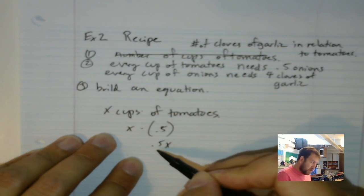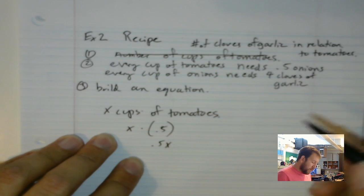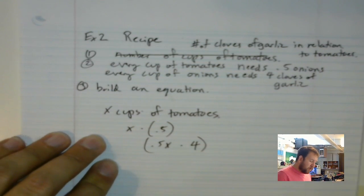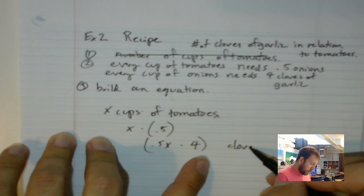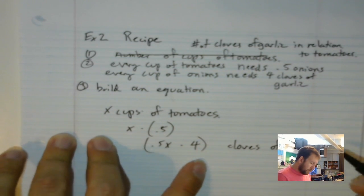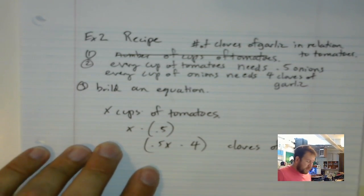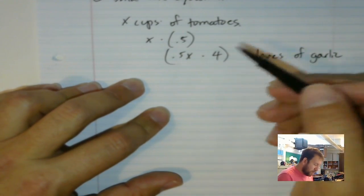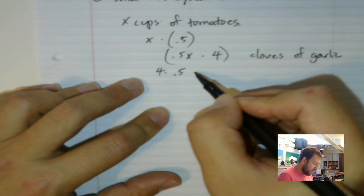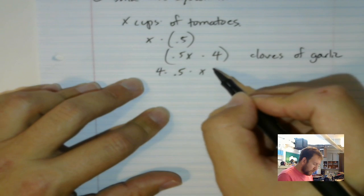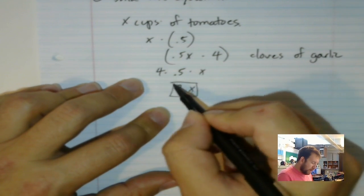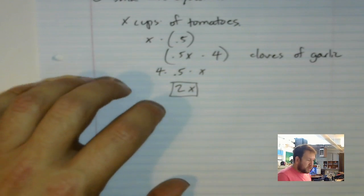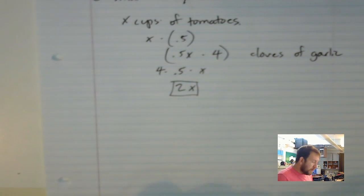Because for every cup of onions, which is 0.5 x, I need 4 cloves of garlic. So I can say 0.5 x times 4 gives me the total number of cloves of garlic I'm going to need. But this is poorly written and not simplified like a mathematician would like. So I need to use my commutative property and scoot this little 4 up to the beginning. So now I have 4 times 0.5 times x. And I can just do 4 times 0.5, which is 2. So 2x. So 2x means that for every cup of tomatoes, I will need 2 cloves of garlic. Which is good if I'm trying to buy and get what I need and get it all set up for my recipe.